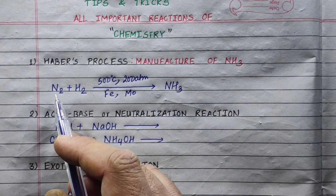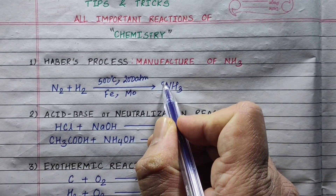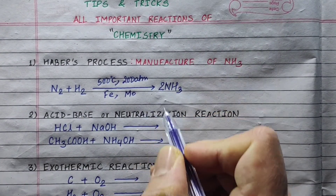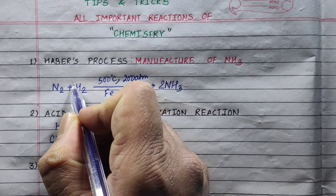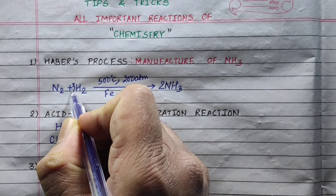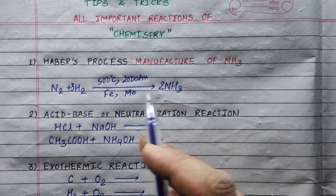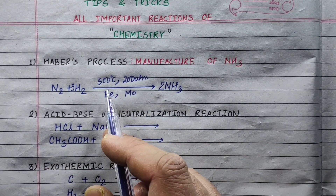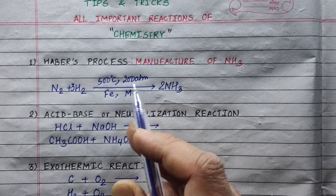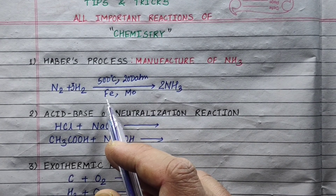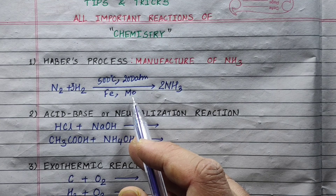We need to balance it. Nitrogen plus hydrogen gives ammonia. Balancing: hydrogen is 2, 3, giving 6. So: N₂ + 3H₂ → 2NH₃ at 500 degrees Celsius, 200 atmospheres pressure, in the presence of iron as a catalyst and molybdenum as a promoter.